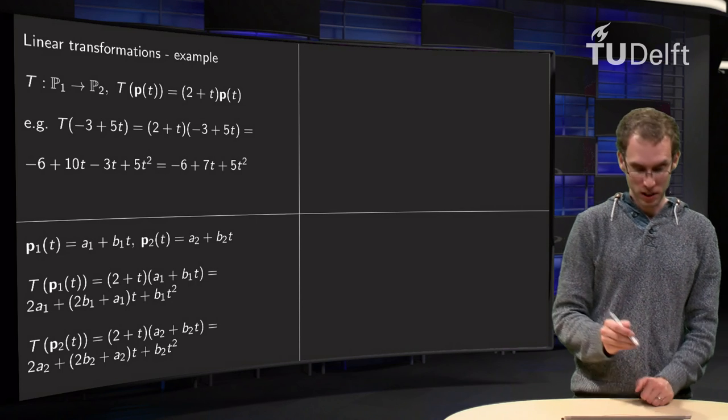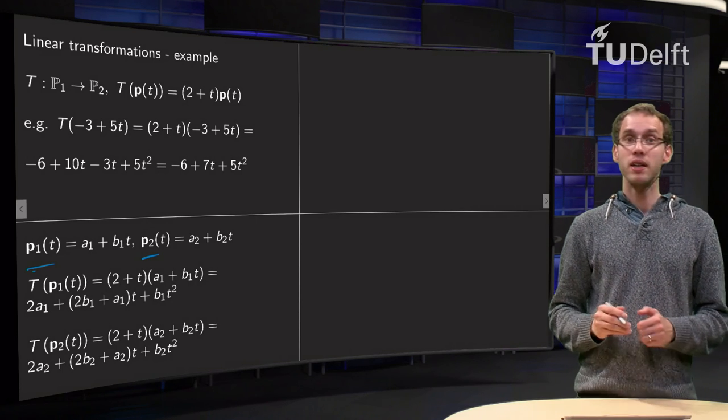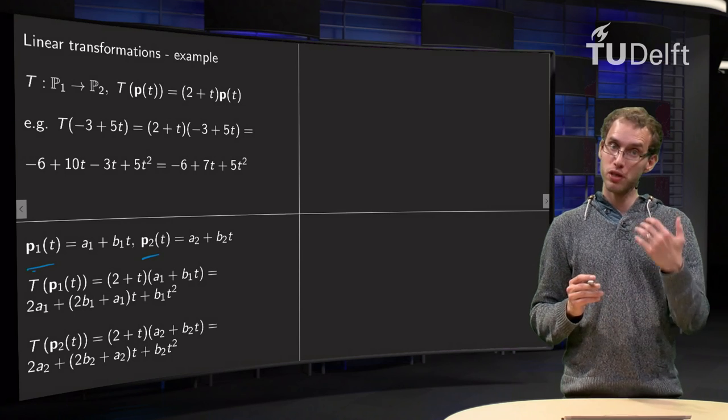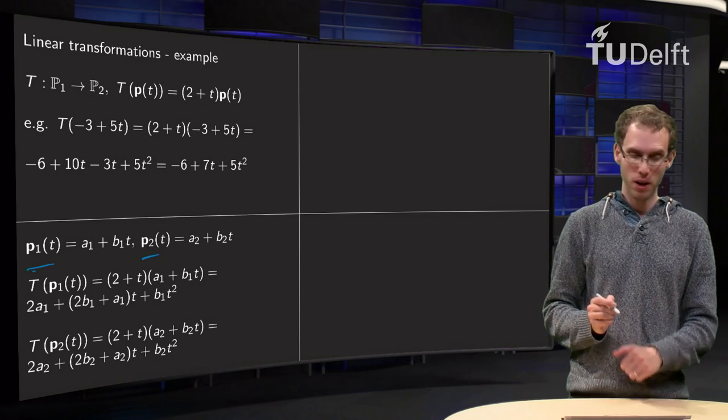So take two arbitrary polynomials, P1 and P2. I compute the T of P1, compute the T of P2 and compute the T of the sum.